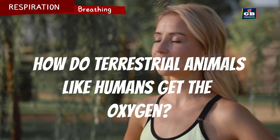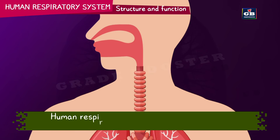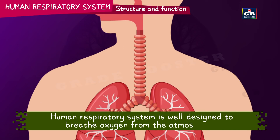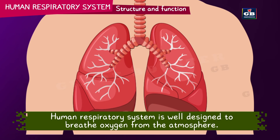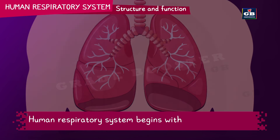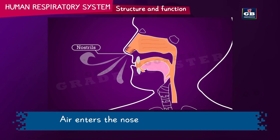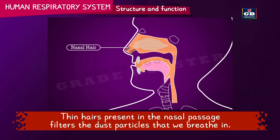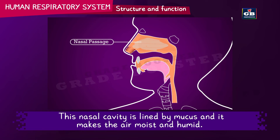The human respiratory system is well designed to breathe oxygen from the atmosphere. It begins with a pair of nostrils. Air enters the nose through these nostrils. Thin hairs present in the nasal passage filter the dust particles that we breathe in. The nasal cavity is lined by mucus, which makes the air moist and humid.